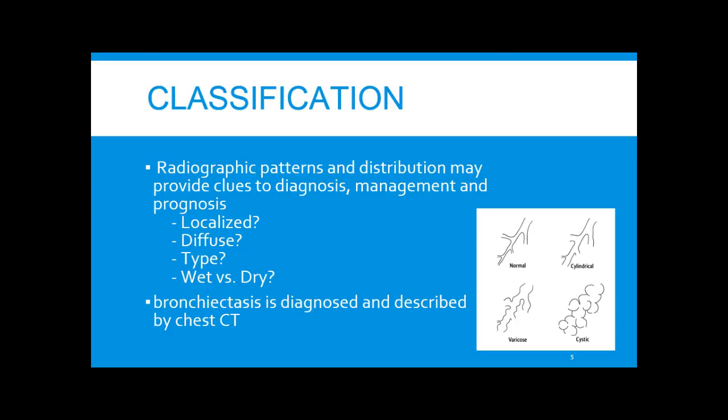Bronchiectasis has been described as wet versus dry. Wet refers to patients with a chronic cough often found to be productive, and on imaging it's found more in the dependent lobes. Dry refers to patients with a chronic non-productive or rarely productive cough, which seems to be associated with upper lobes.